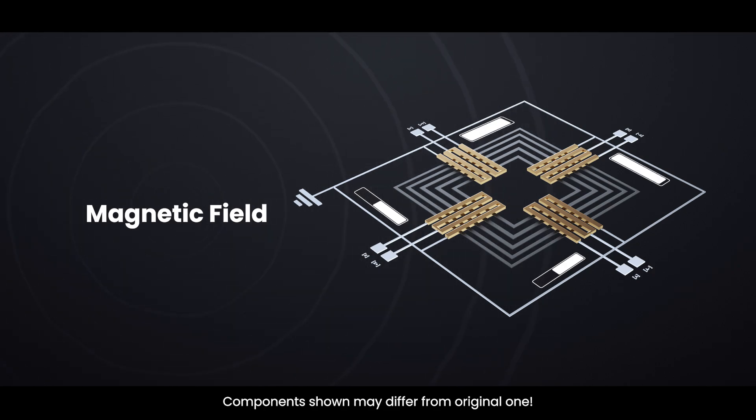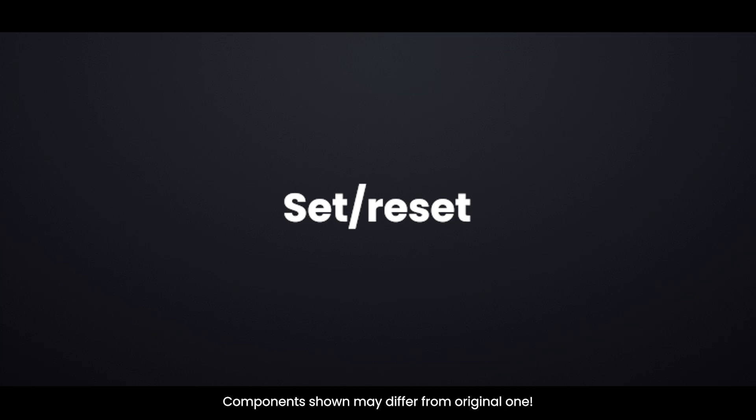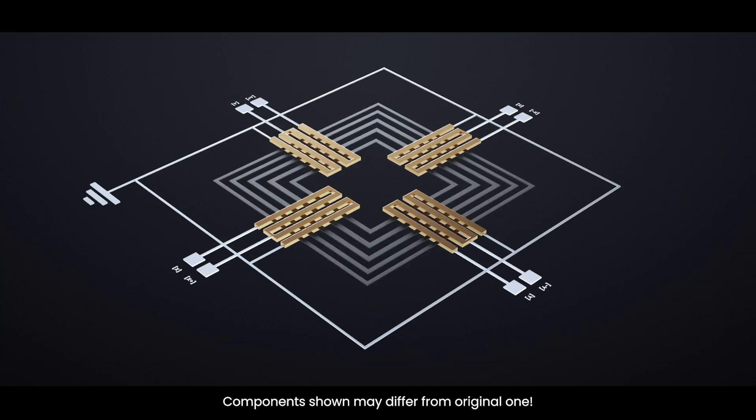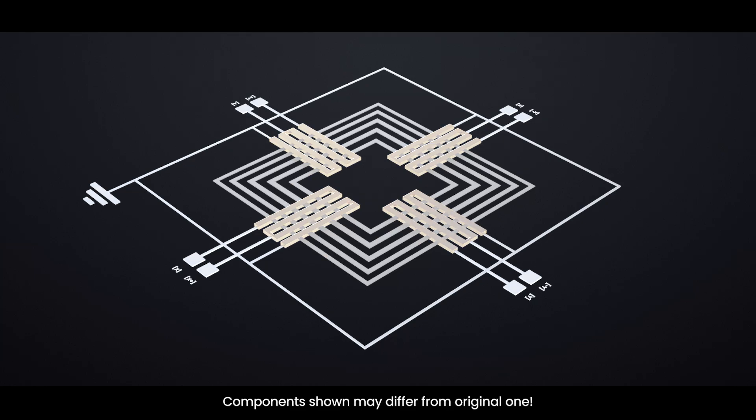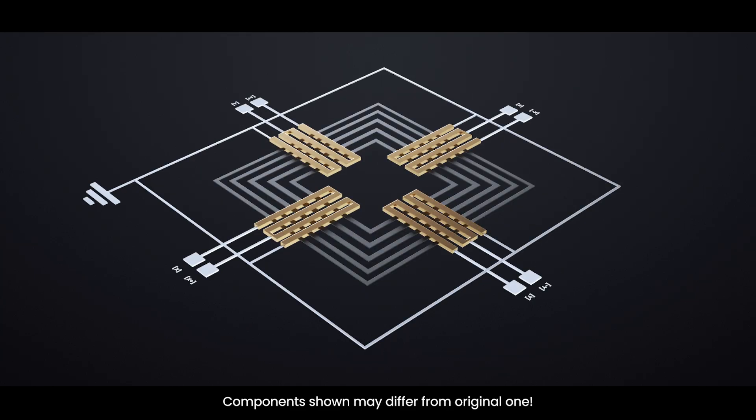To keep readings stable and eliminate residual magnetization, the chip uses a technique called SET-RESET pulsing, where a brief, strong current realigns the magnetic domains of the sensing material before each measurement. This ensures the sensor starts from a clean and known state every time.